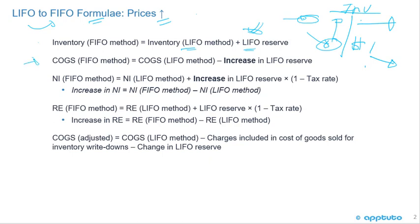Under FIFO with rising prices, the lower-priced inventory goes out first, so cost of goods sold under FIFO is going to be less. We calculate FIFO cost of goods sold as LIFO cost of goods sold minus the increase in the LIFO reserve — that is, the change in the reserve. The reserve increases when prices are increasing and units are being added.